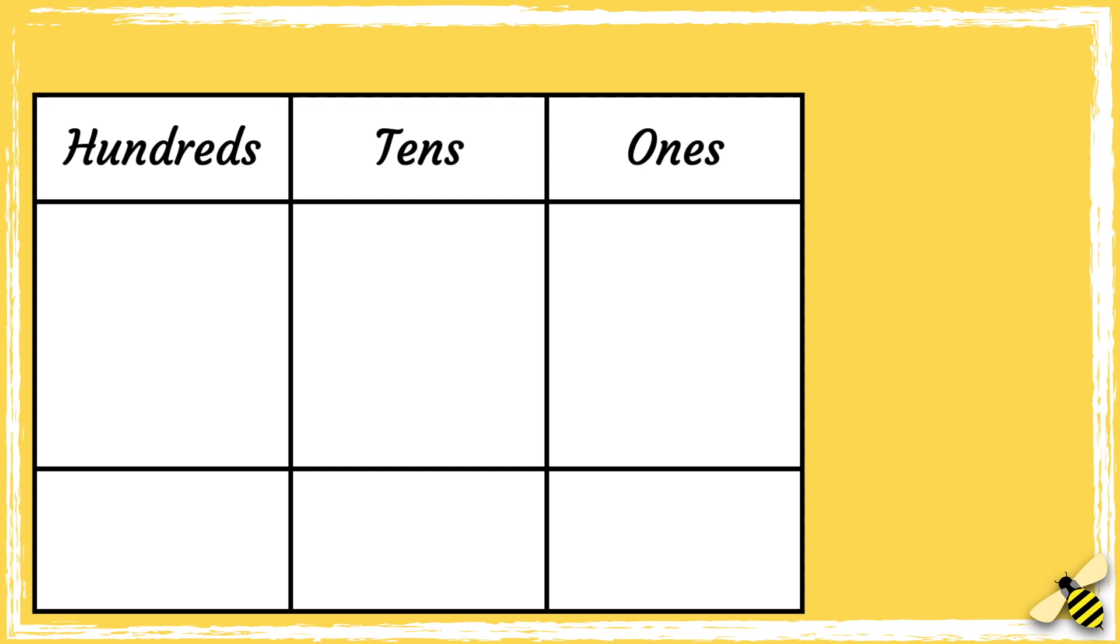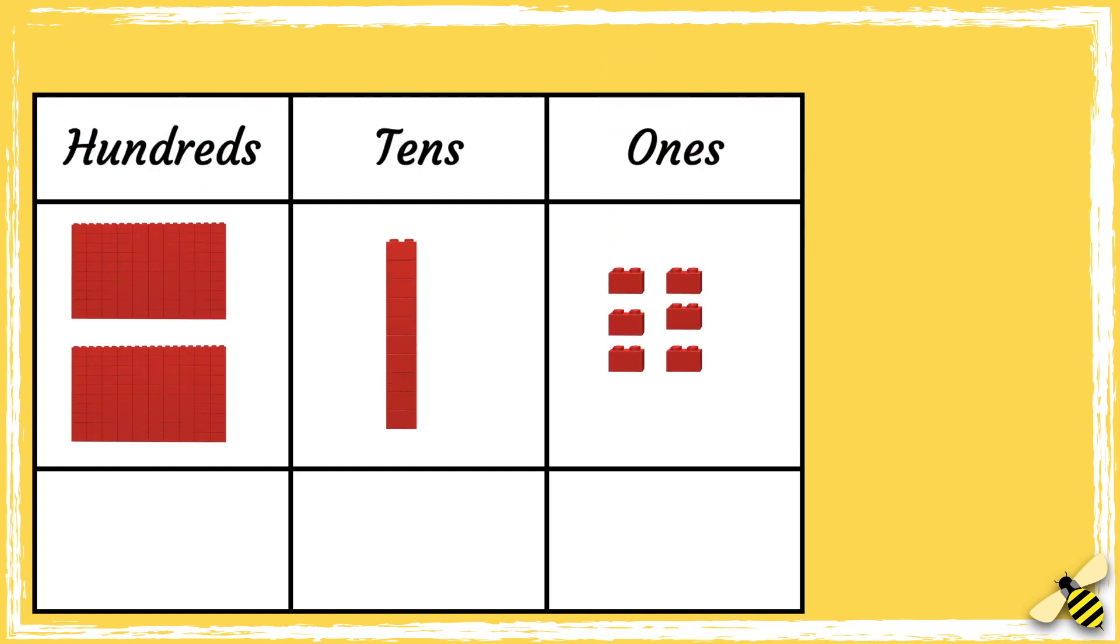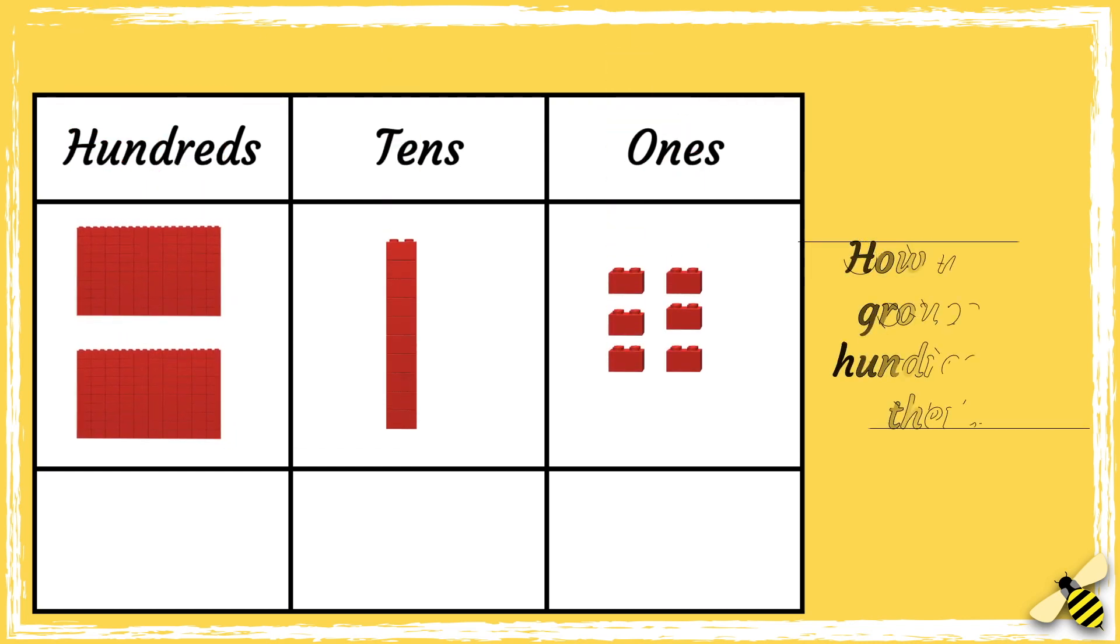Let's have a look at another number. What number is shown on the grid? How many hundreds are there?